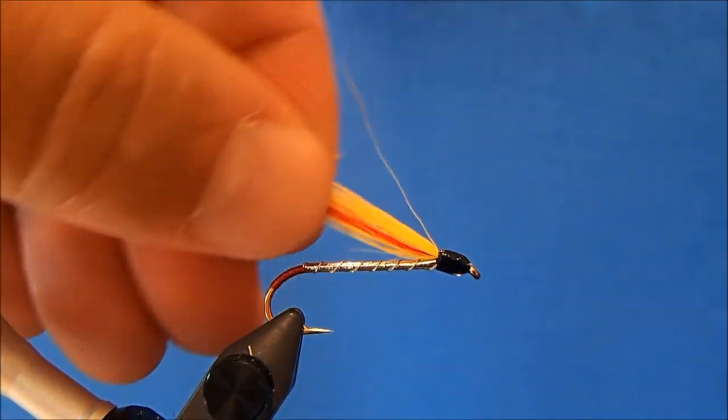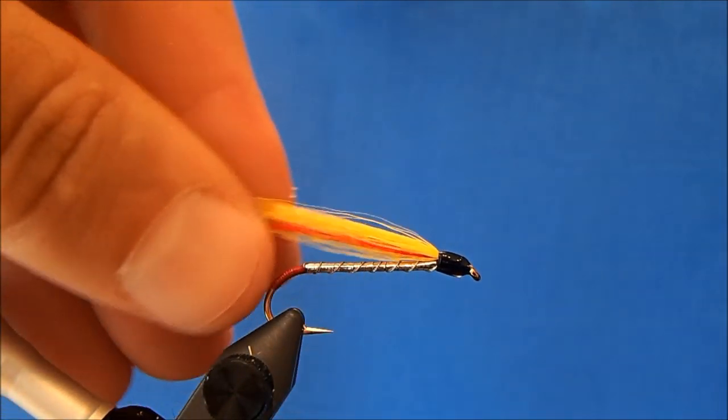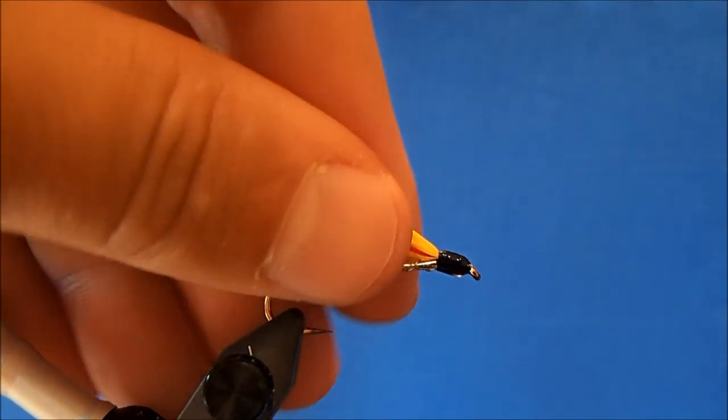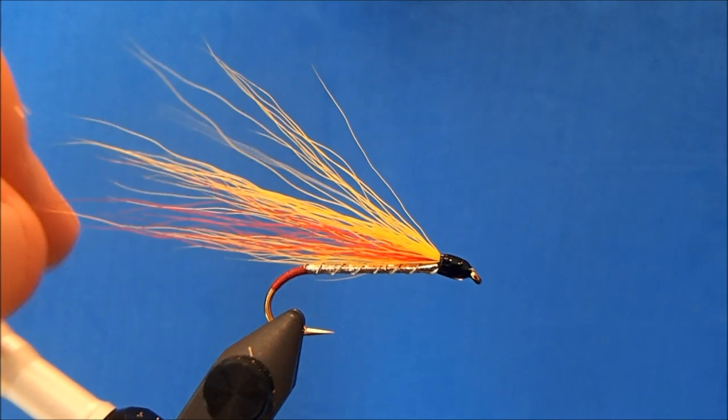And again that's one of the classic streamers. You can tie the wings in a couple of different materials as well. You can use a marabou or you have a lot of different options there.